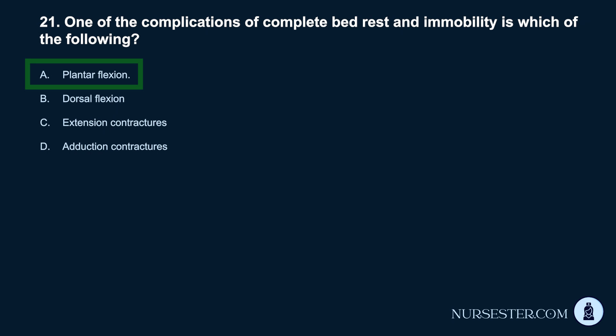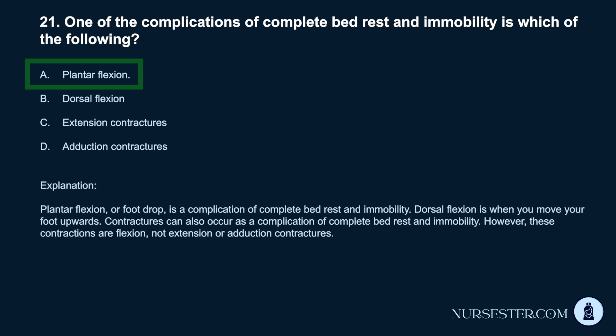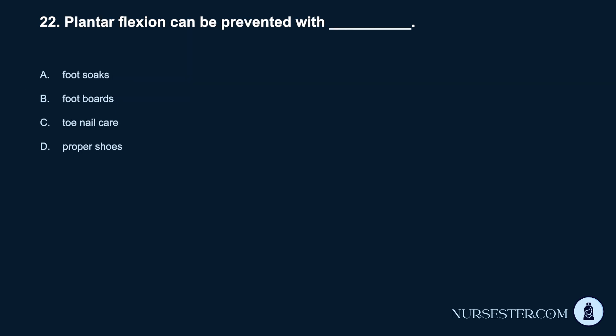Correct answer: A. Plantar flexion. Plantar flexion, or foot drop, is a complication of complete bed rest and immobility. Dorsal flexion is when you move your foot upwards. Contractures can also occur as a complication of complete bed rest and immobility; however, these contractures are flexion contractures, not extension or adduction contractures.